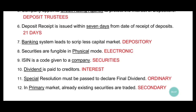Ninth: ISIN is a code given to a company. ISIN — International Securities Identification Number — is a code given to securities, not a company. It is a unique code. So 'company' changes to 'securities'.